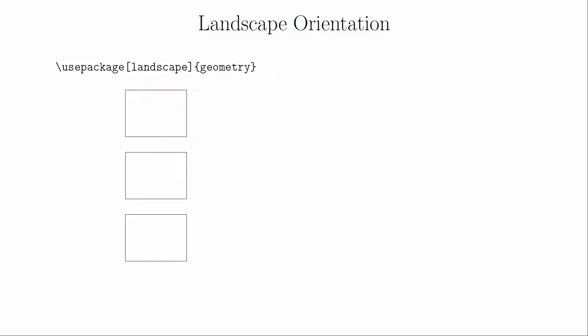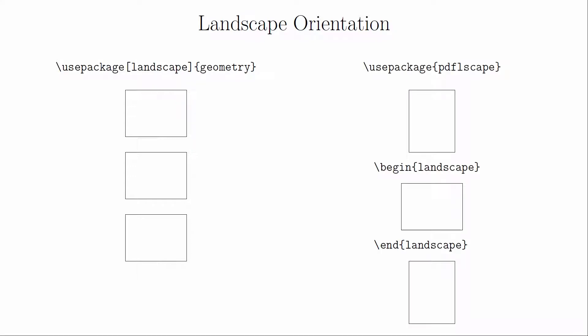If you want to have your paper oriented as landscape instead of portrait, you can use the landscape option with the geometry package. The downside of this is that it makes the entire document landscape mode. If you only wanted parts of the document to be this way, PDFlscape can do this — just put the parts you want in landscape mode between \begin{landscape} and \end{landscape}. This can be helpful if you have a wide table or image that needs extra width.